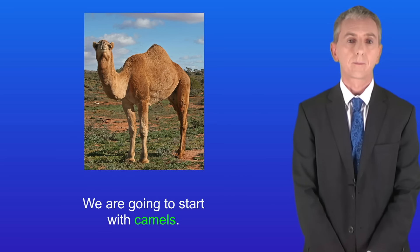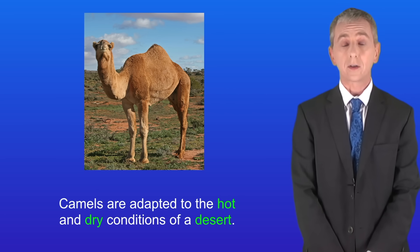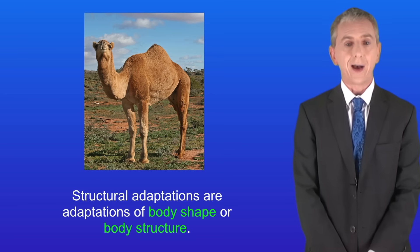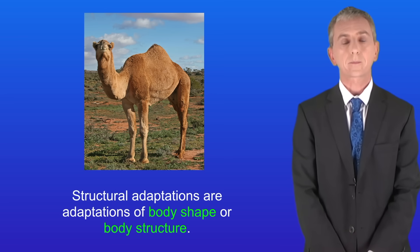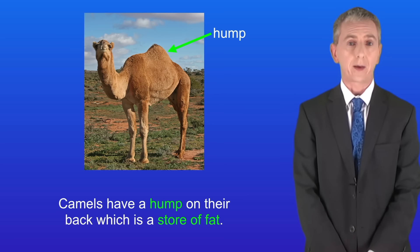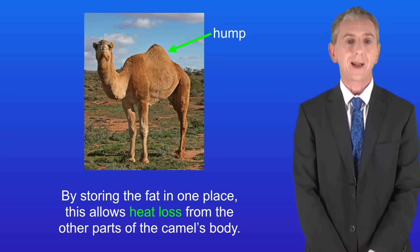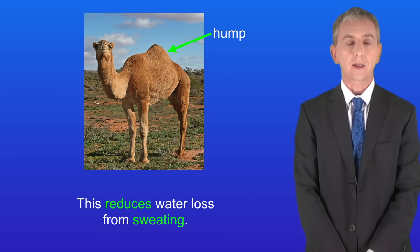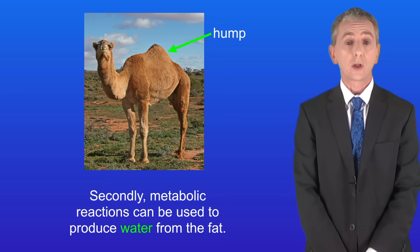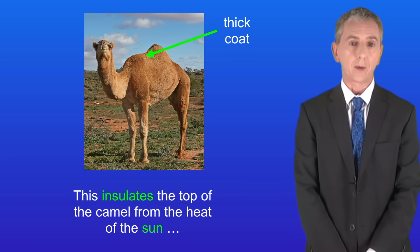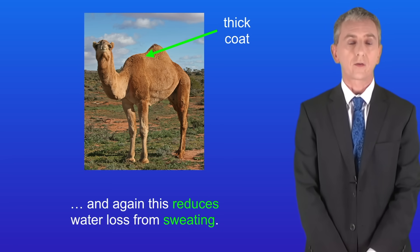We're going to start with camels. Camels are adapted to the hot and dry conditions of a desert, and many of these are structural adaptations. Structural adaptations are adaptations of body shape or body structure. Firstly, camels have a hump on their back and that's a store of fat. Fat is a thermal insulator, so by storing the fat in one place this allows heat loss from other parts of the camel's body, and this reduces water loss from sweating. Secondly, metabolic reactions can be used to produce water from the fat. Camels have a thick coat on the upper surface of their body, which insulates the top of the camel from the heat of the sun and again this reduces water loss from sweating.